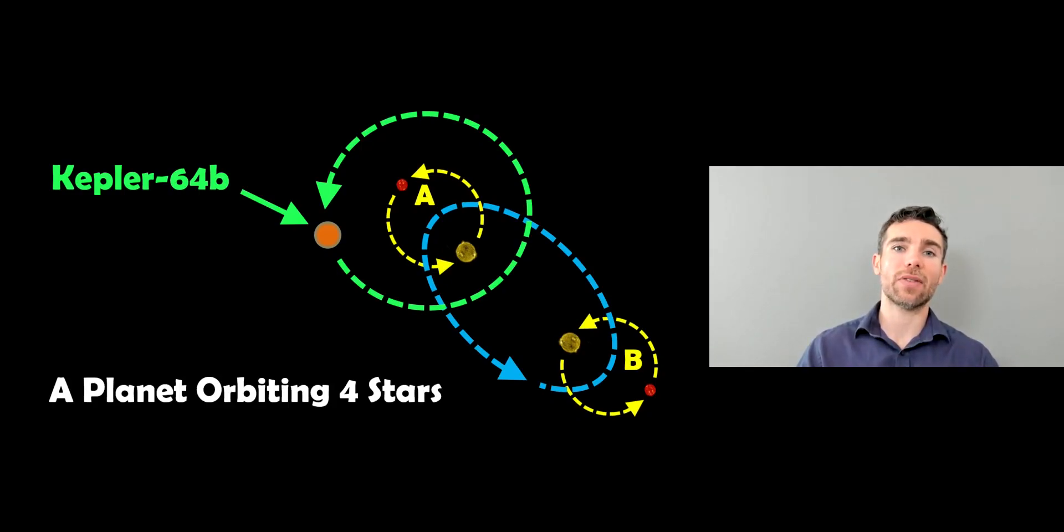Welcome to this video where I'm going to have a look at a planet that actually orbits four stars. The planet's called Kepler-64b and it's quite an interesting system actually.